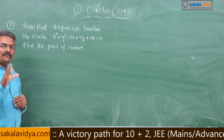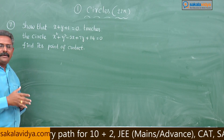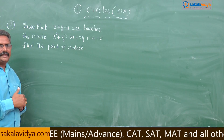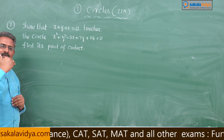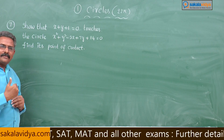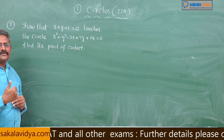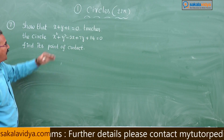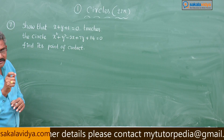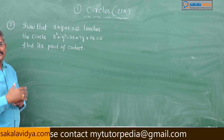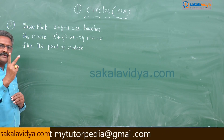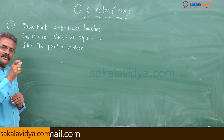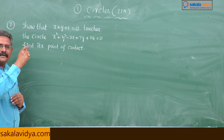For the point of contact: in intermediate first year, in straight lines, you might have studied the foot of the perpendicular drawn from a point on the line. The foot of the perpendicular from the center of the circle to the tangent is nothing but the point of contact. So first we have to test for tangency, then find the point of contact.